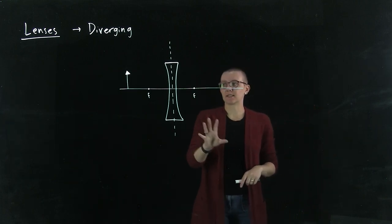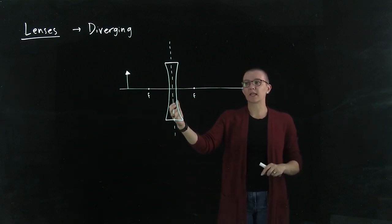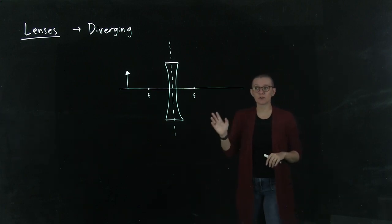This is a diverging lens. What that means is that any light entering through one side of the lens will be diverged away from each other. This does the exact opposite of a converging lens.